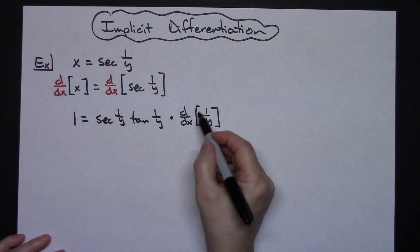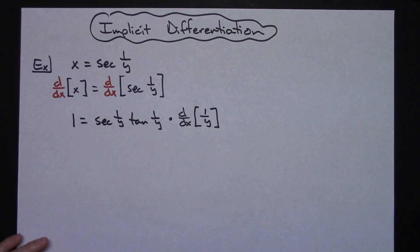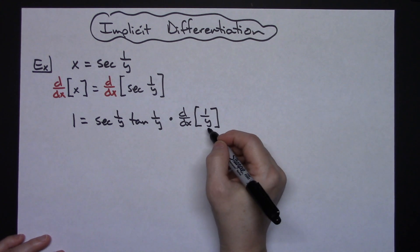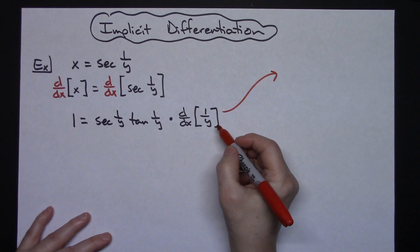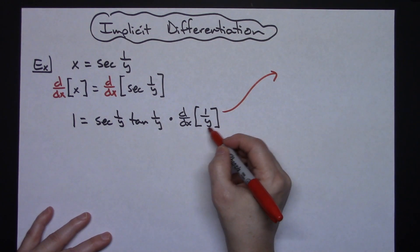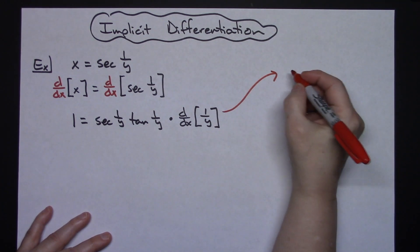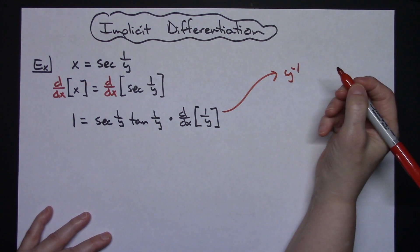Now on this part right here you could do it a variety of ways if you wanted you could do quotient rule. If not here let's come out here you could probably do it a little bit faster if you would take that y to the first power move it up to the top use your laws of exponents so make that a y to the negative 1.